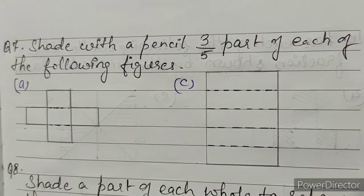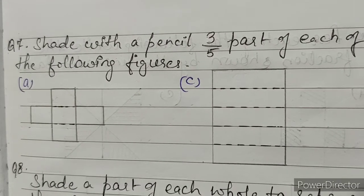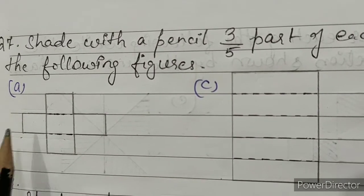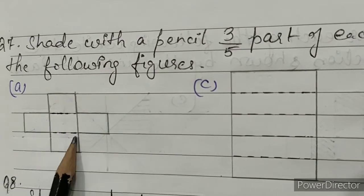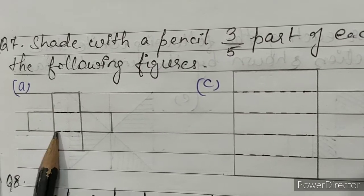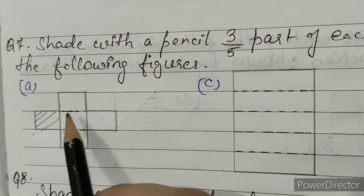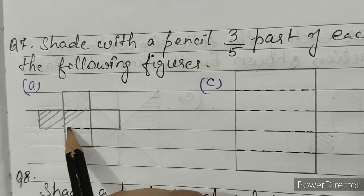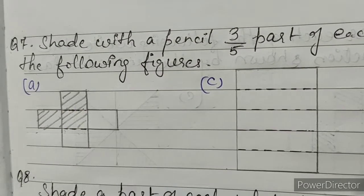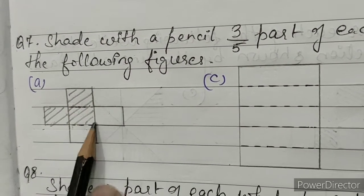Question number 7: shade with a pencil three fifths of each of the following figures. A: this figure is divided into 5 equal parts. We have to shade any 3 parts: 1, 2, 3. This is 3 fifths of this figure.